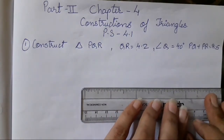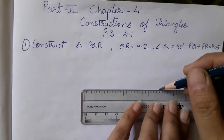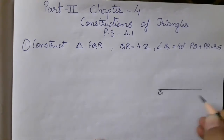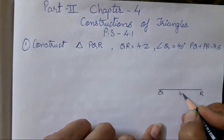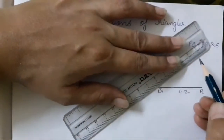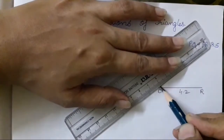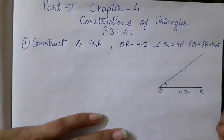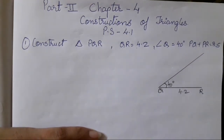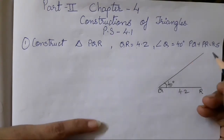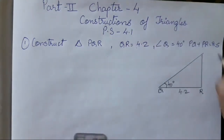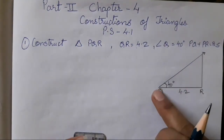First, 4.2 is going to be our base. A rough figure is a must. I have to mark this as Q and R, that is supposed to be 4.2 centimeter. Angle Q is 40 degrees, so I will draw an angle Q. The way I have drawn the rough figure, in the same way I am going to draw the fair figure also. This is going to be the 40 degrees as given in the question. After that, we have to join this line.